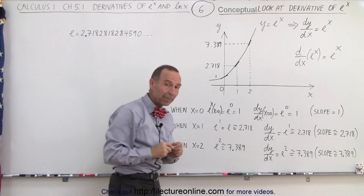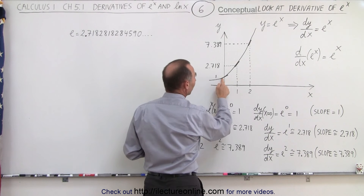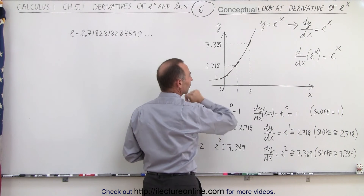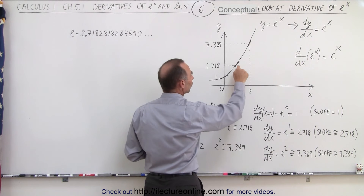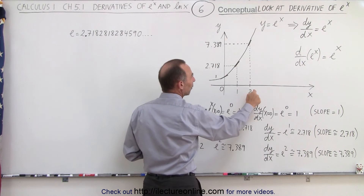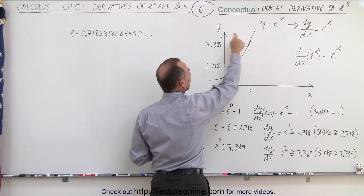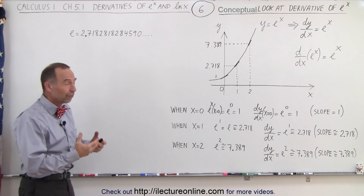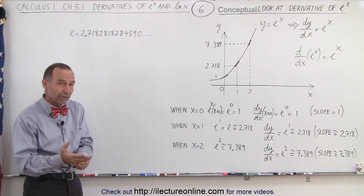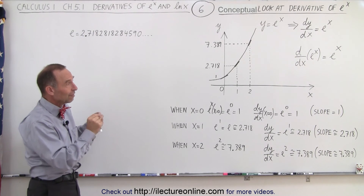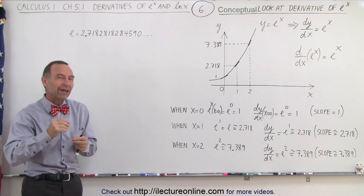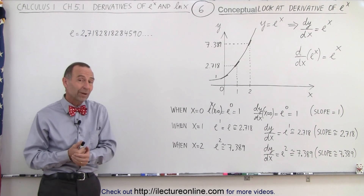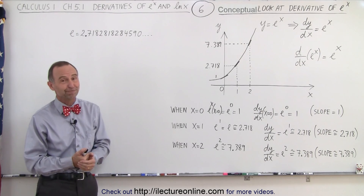So essentially what is happening here: the slope of the function is equal to the value of the function. When x equals 0, the slope is 1 and the value of the function is 1. When x equals 1, the slope is 2.718 and the value of the function is 2.718. When x equals 2, the slope is 7.389 and the value of the function is 7.389. That's what we mean by the derivative of y equals e to the x being equal to e to the x. When we plug in any value for x, we get the same value for the slope as we do for the function. It's the only function in all of mathematics that does that.